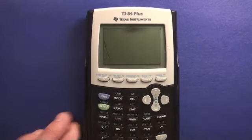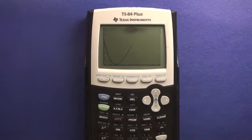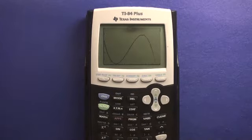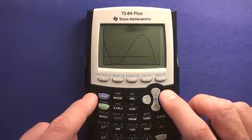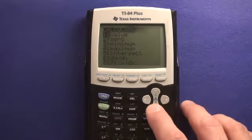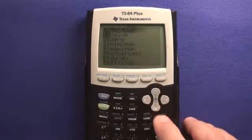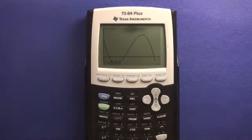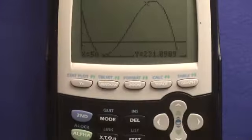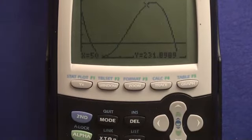So we press graph. There's our equation. If we want to find the weight when X is 50, we're going to press second, calculate, value. When X is 50, press enter, and we get a Y value of about 232 ounces.